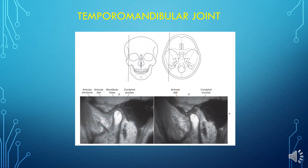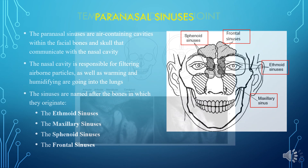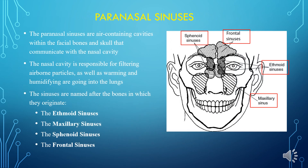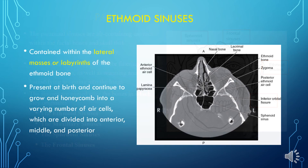This is the 3D scan of the temporomandibular joint. Now let's learn the paranasal sinuses. The paranasal sinuses are air-containing cavities within the facial bones and skull that communicate with the nasal cavity. The nasal cavity filters airborne particles and warms and humidifies air going into the lungs. The sinuses are named after the bones in which they originate: the ethmoid sinuses, maxillary sinuses, sphenoid sinuses, and frontal sinuses. The ethmoid sinuses are contained within the lateral masses or labyrinths of the ethmoid bone, present at birth, and continue to grow into a varying number of air cells divided into anterior, middle, and posterior.